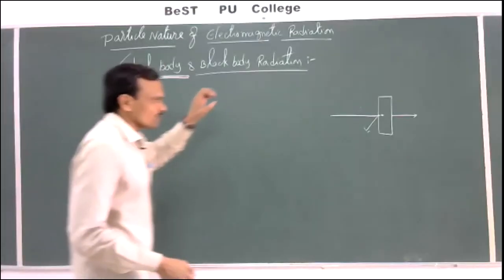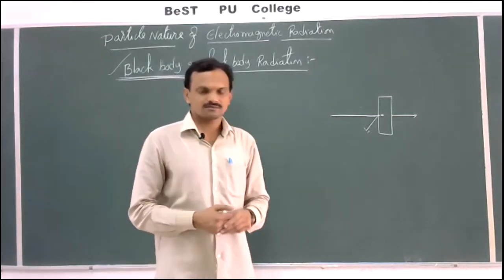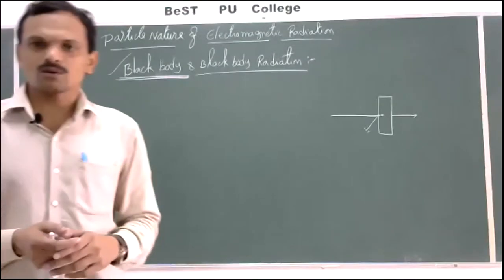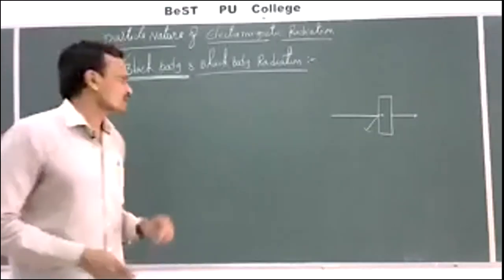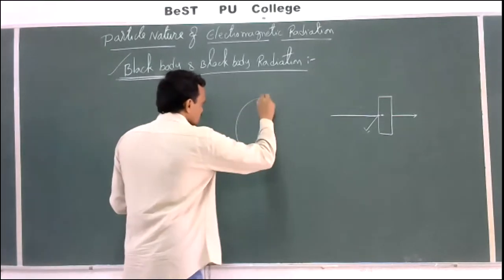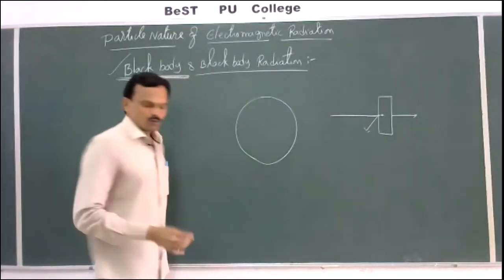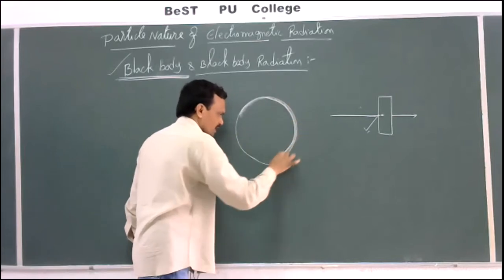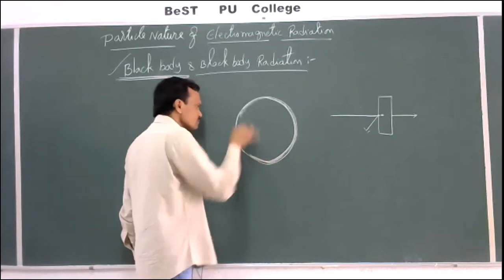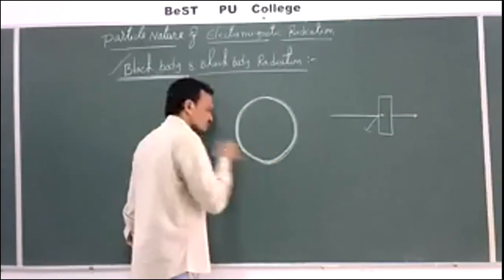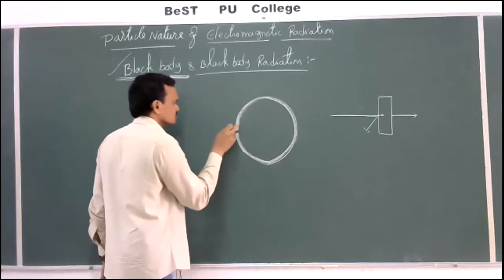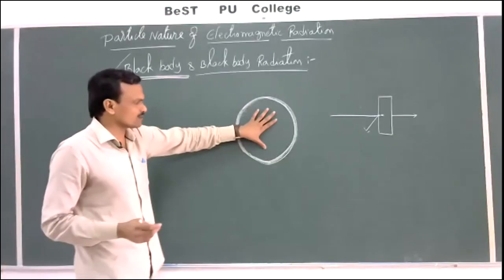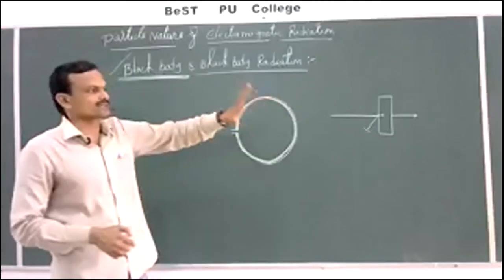A black body is a body that absorbs all radiations made to fall on it, but no such perfect substance exists in the universe. However, a hollow sphere which is inside coated with platinum black — finely divided platinum — and having a fine hole can act nearly as a black body.